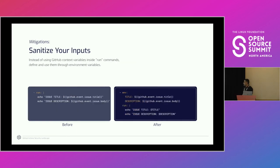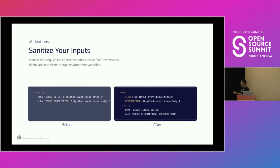The second mitigation is sanitizing your input — perhaps the most effective way to stop this specific attack. Instead of using issue title or issue body directly inside the run command, the preferred method is to define them outside as intermediate environment variables — for example, 'title' and 'description' — and then use those environment variables inside the run command. Even if the title or description contains code, it won't be executed; it will be treated as text because it's sanitized as an environment variable.